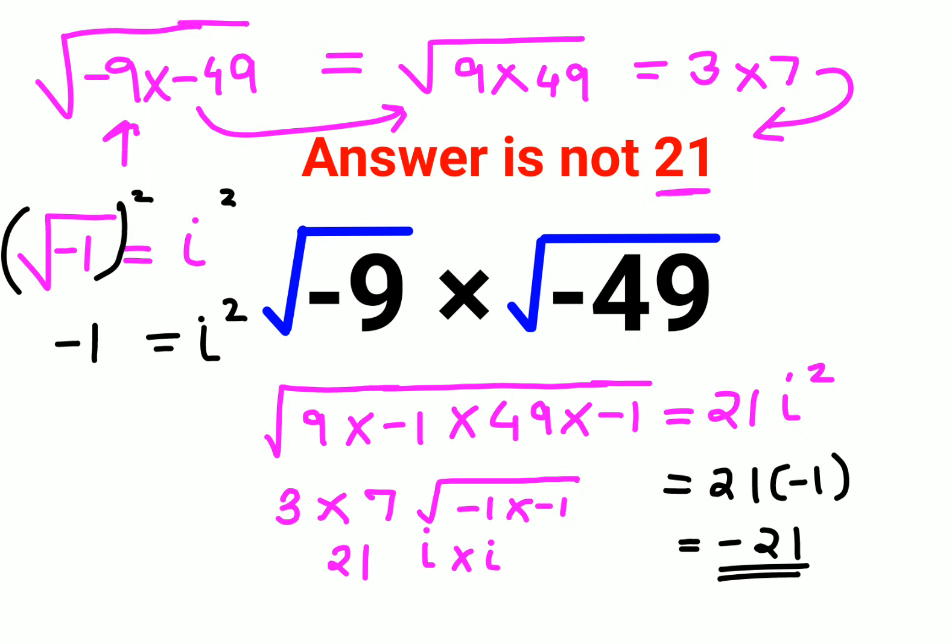So for this particular question, or whenever you have a negative number under a root, please don't forget that root of minus 1 gets you i. So the answer for this one is minus 21. That's it for today. I will see you in the next video.